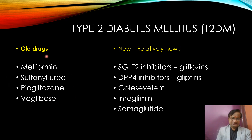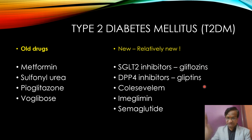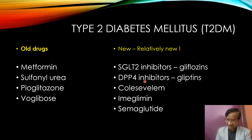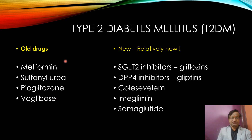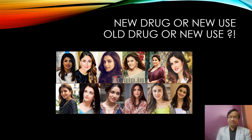There are old drugs and there are new drugs. The new ones include SGLT2 inhibitors, Gliptins, and drugs like Colesevelam, Imeglimin, and Semaglutide. Sometimes old drugs may come for new use and new drugs may come for old use as well.